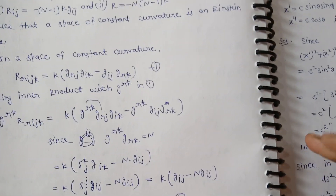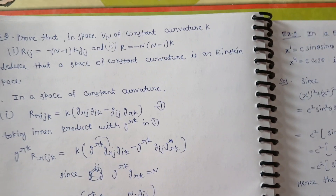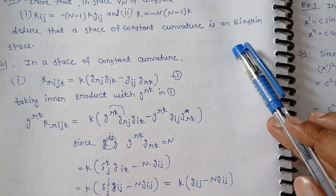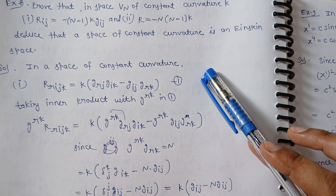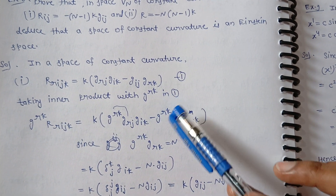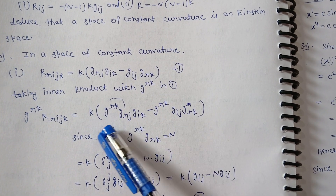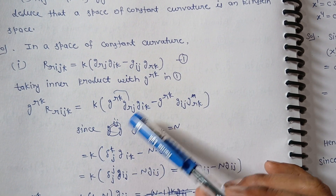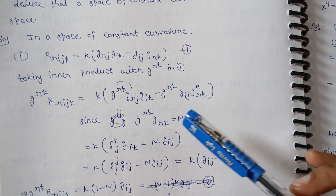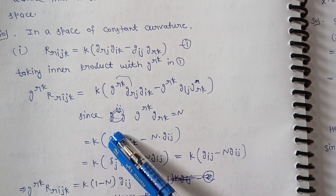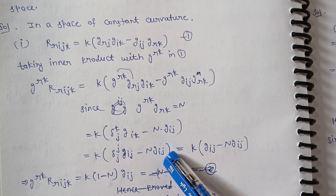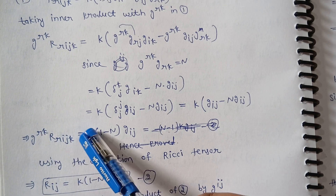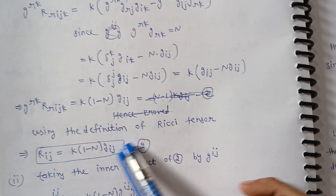The next example asks us to prove that a space Vn of constant curvature is an Einstein space. Einstein's space is defined by R_ij = (R/n) g_ij. For the first part, in a space of constant curvature we take the inner product and prove that the result equals g_rk times n. We perform contractions with one contravariant and one covariant index, so delta^k gives G as is, and G^rk with G_rk gives n. G_ij remains, and then K times (1 minus n) appears.